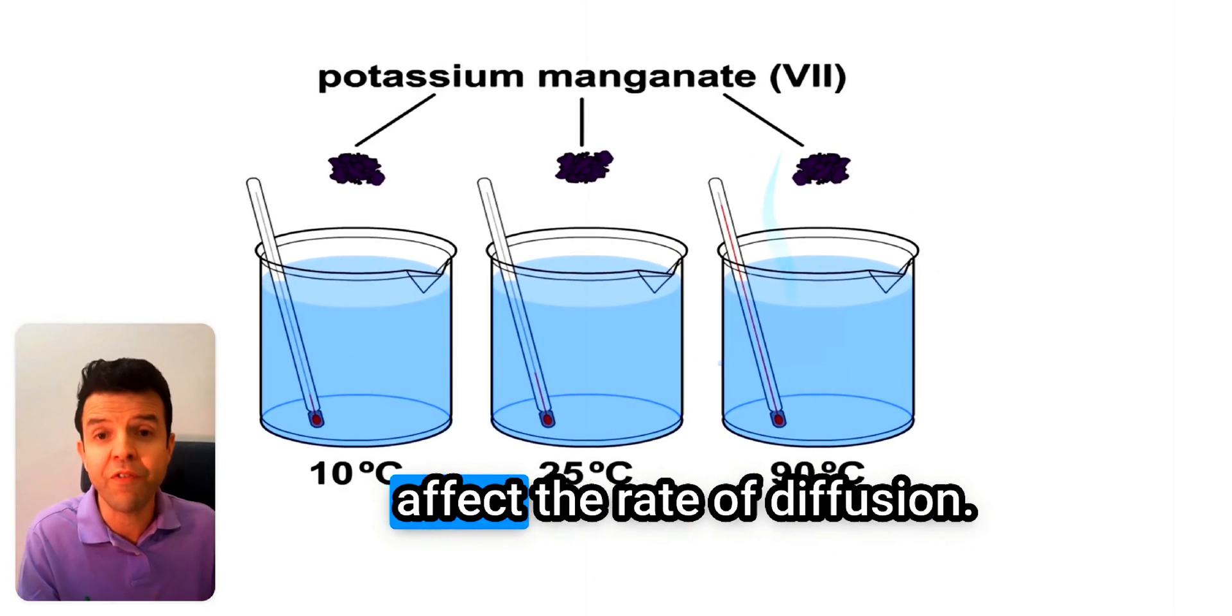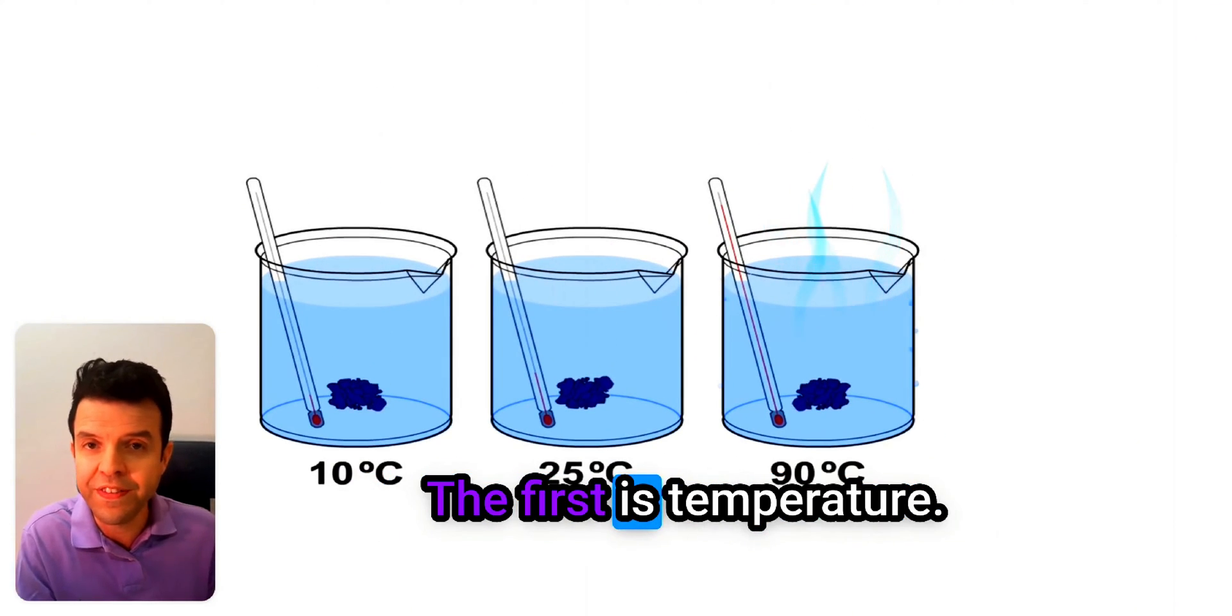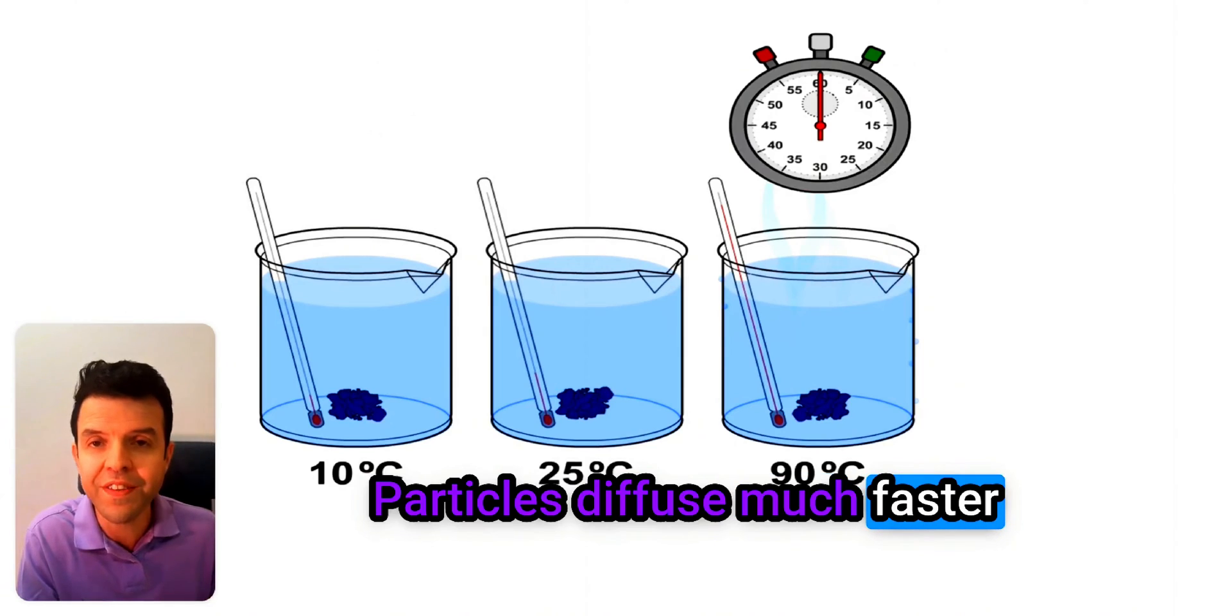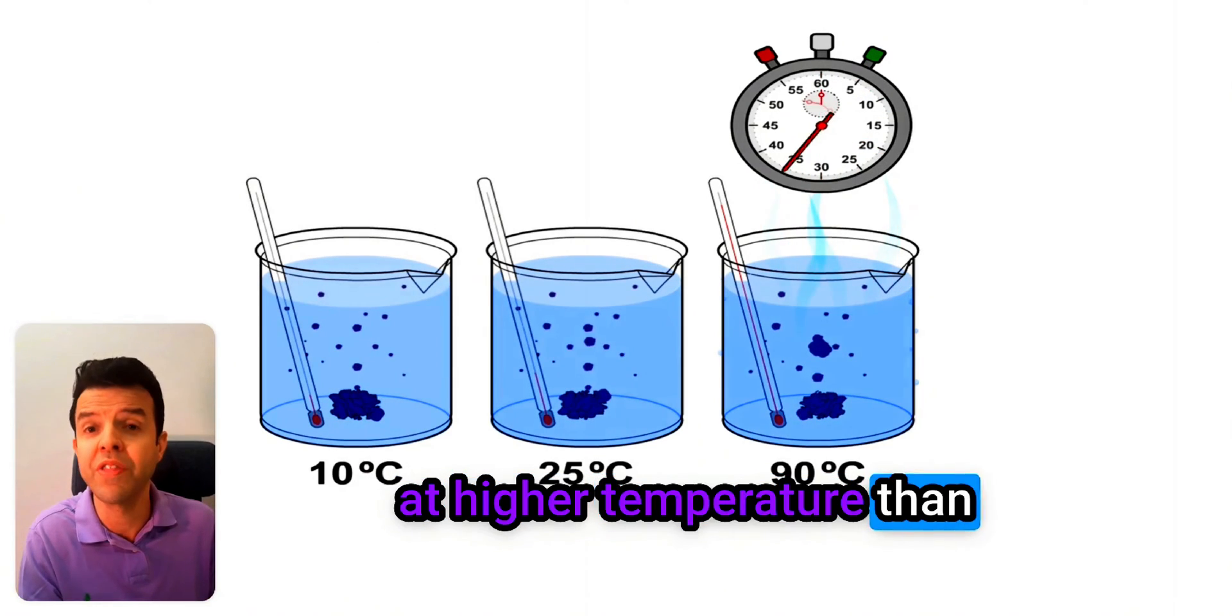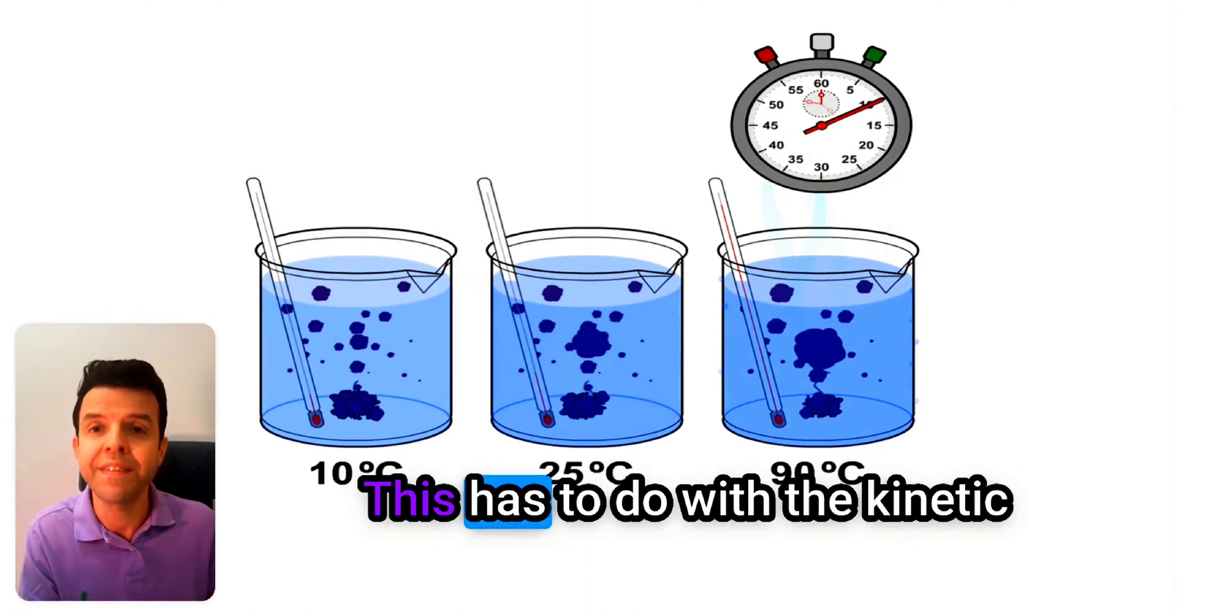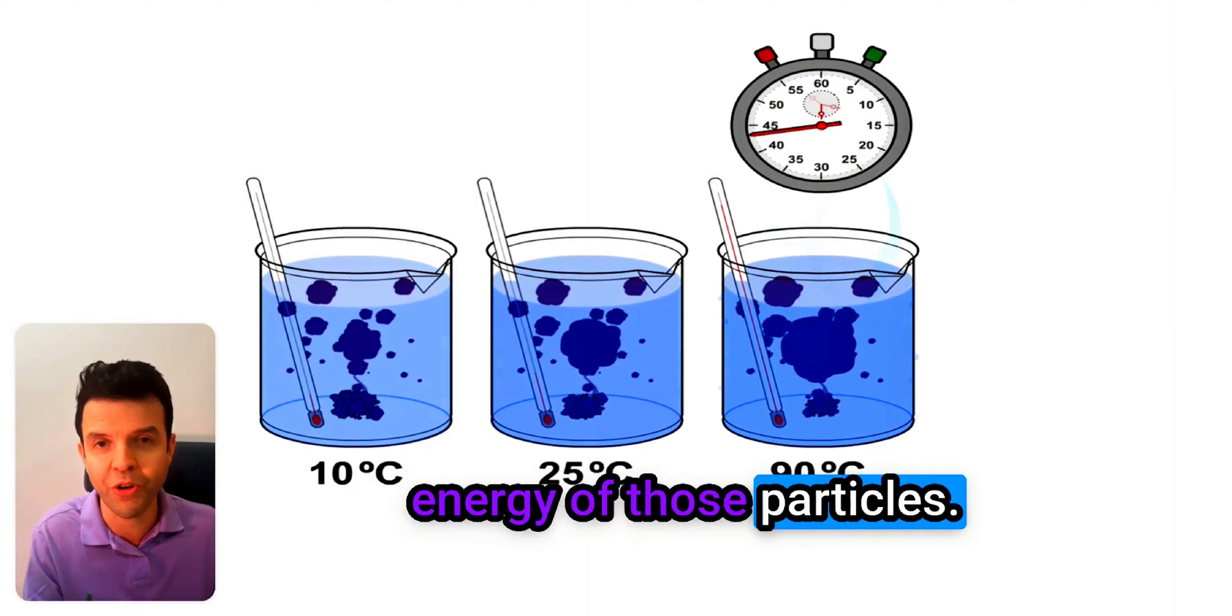There are two factors that affect the rate of diffusion. The first is temperature. Particles diffuse much faster at higher temperature than they are at lower temperature. This has to do with the kinetic energy of those particles.